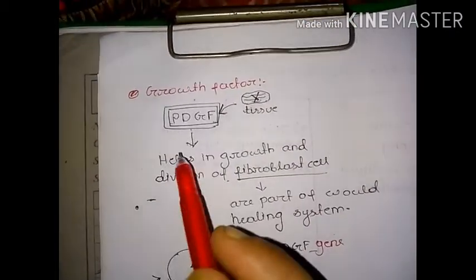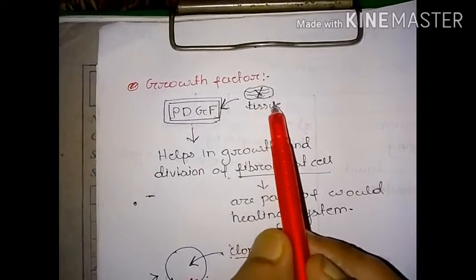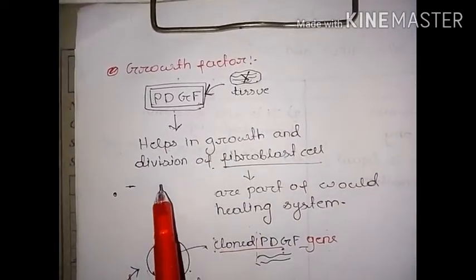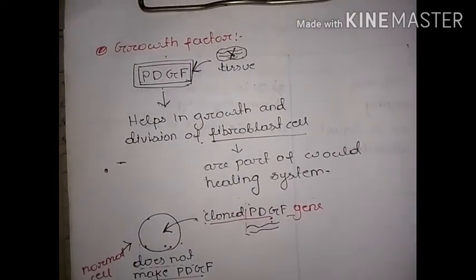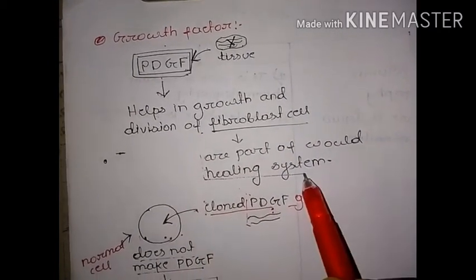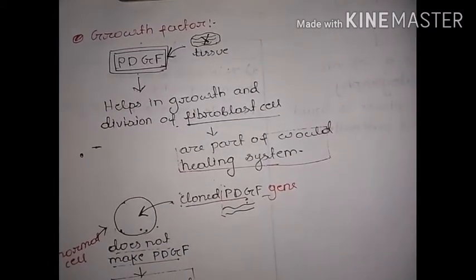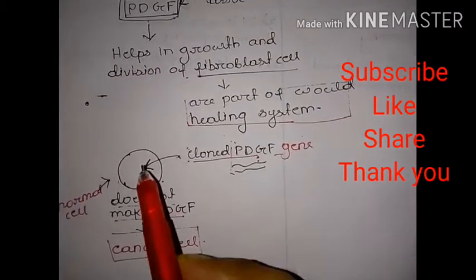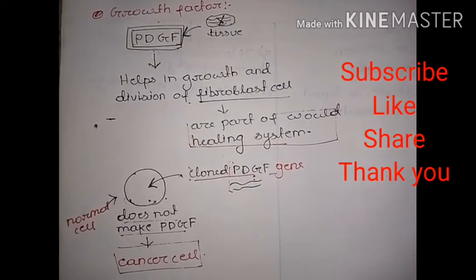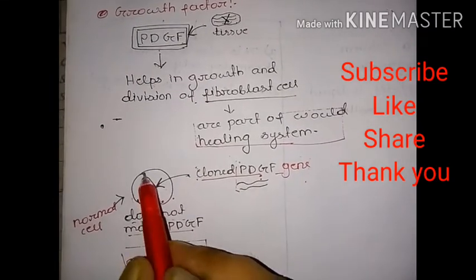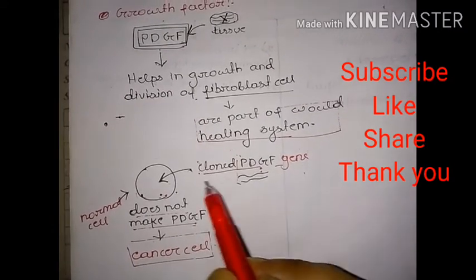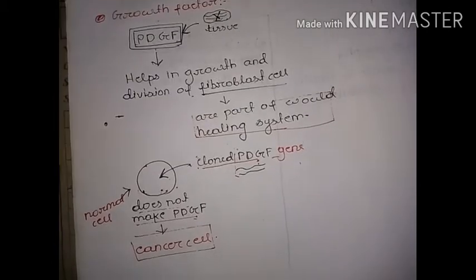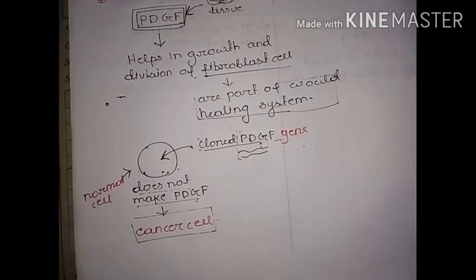In summary: PDGF, platelet derived growth factor, is released when tissue damage occurs. It helps in the growth and division of fibroblast cells, which are part of the wound healing system. When a normal cell that does not make PDGF is introduced with a cloned PDGF gene, this normal cell transforms into a cancer cell. This is the process by which a normal cell is transformed into a cancer cell.